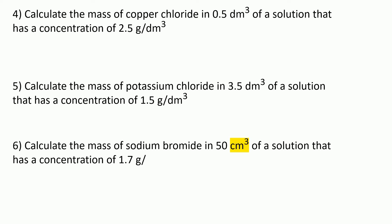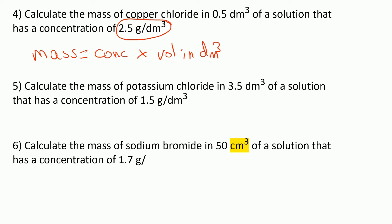This time the questions are asking you to calculate the mass, so think about which form of the equation you need. We use mass equals concentration times volume in dm cubed. For question four, we spot the concentration — the value in grams per dm cubed — so it's 2.5 times 0.5, which equals 1.25 grams.